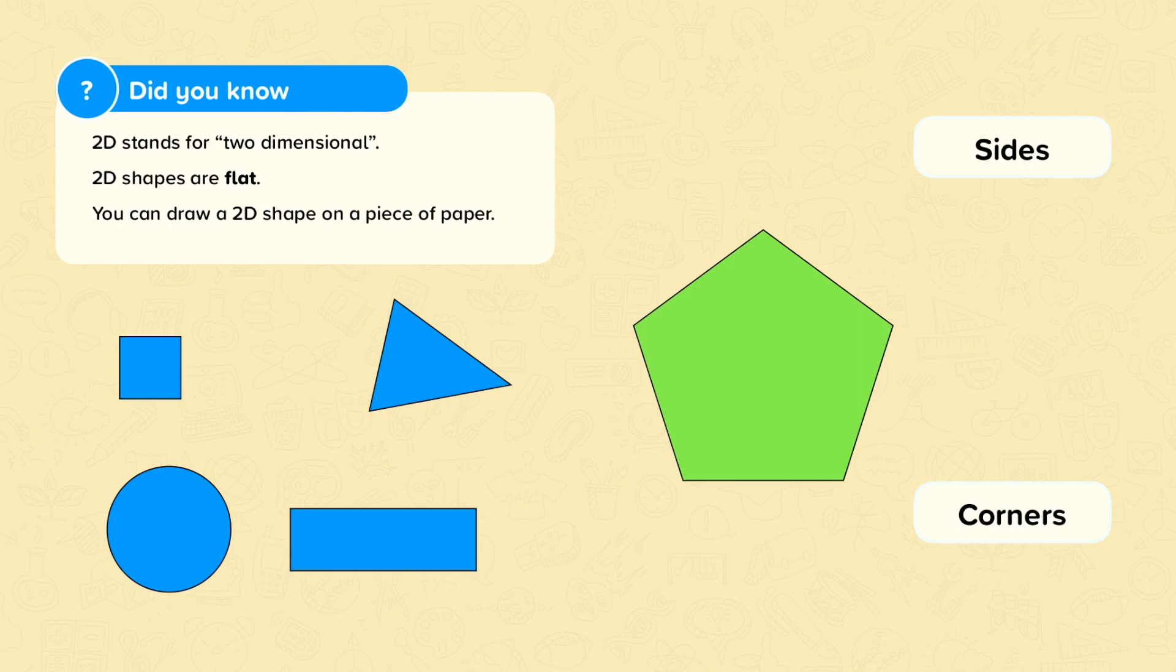Now there are two words that you'll need to know when describing a 2D shape: sides and corners.